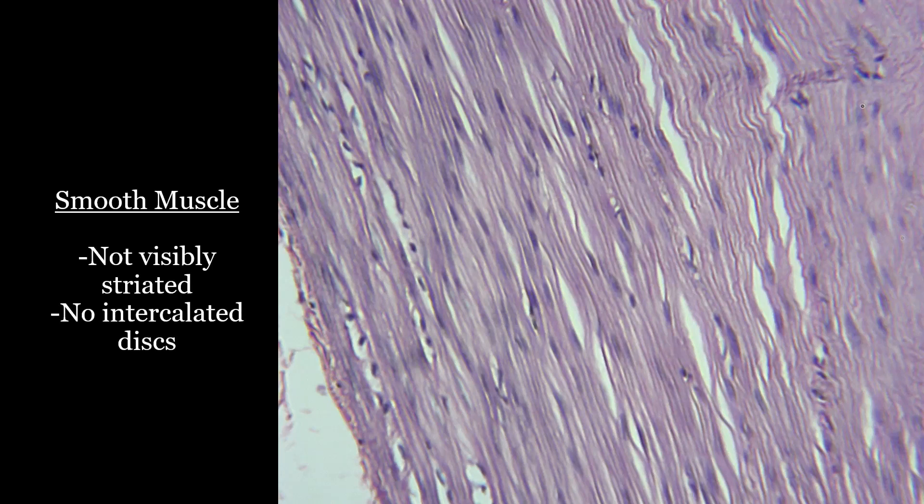When you look at this, because you don't see striations and there's definitely not any intercalated discs, you know that it is smooth muscle.